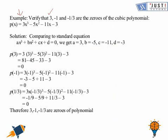Here is another question: verify whether 3, minus 1 and minus 1 over 3 are the zeros of p(x), where p(x) equals 3x cubed minus 5x squared minus 11x minus 3. To check, we substitute x equals 3 — if the result is zero, then 3 is a zero of the polynomial. Then we substitute x equals minus 1, and then x equals minus 1 by 3, checking each time if the result equals zero.